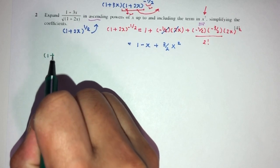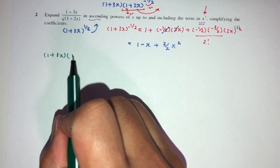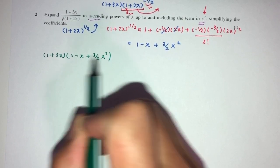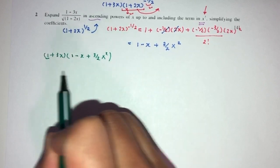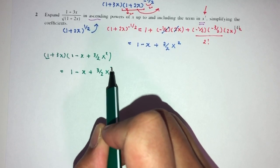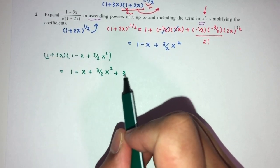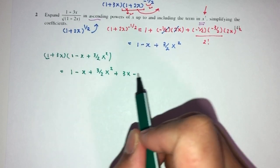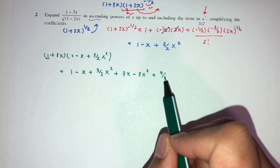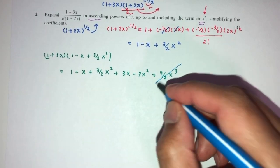So, we have to take this one right here times this one. This one became this: 1 minus this one plus 3 over 2 x squared. Now, 1 times this thing will be the same thing. 1 times something will be the same. Now, this one times this will be plus 3x. Times this will become minus 3x squared. Times this one should be plus 9 over 2 x cubed. But again, here we don't need x cubed, so we can just remove this one.